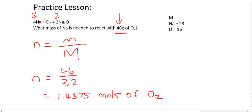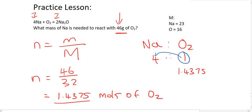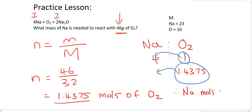Now we look at the equation and we can see that the ratio from Na to oxygen is 4 to 1. We have 1.4375 moles of oxygen, so to go from oxygen to sodium we multiply by 4. Therefore, the moles of sodium would be equal to 5.75.